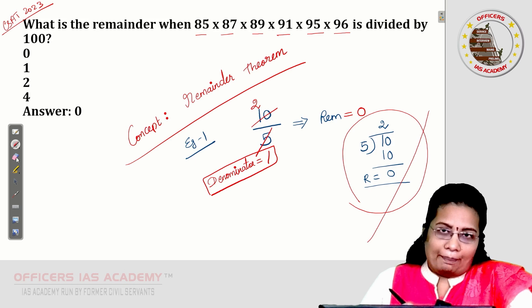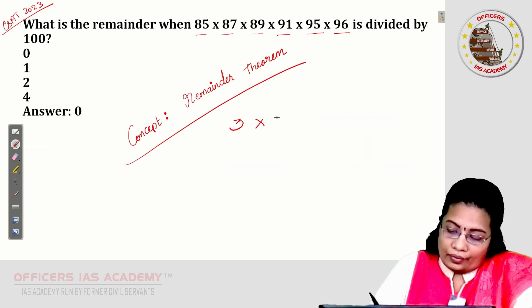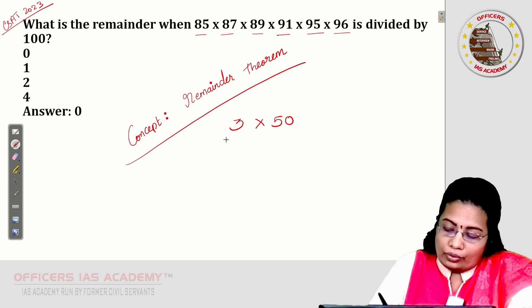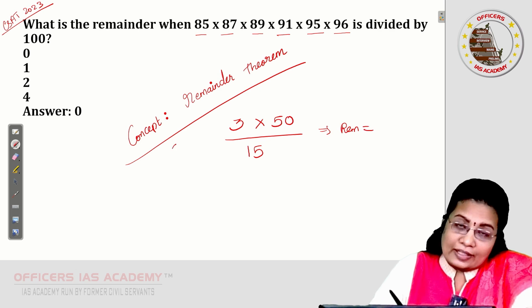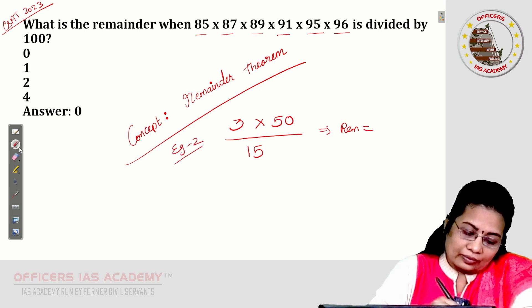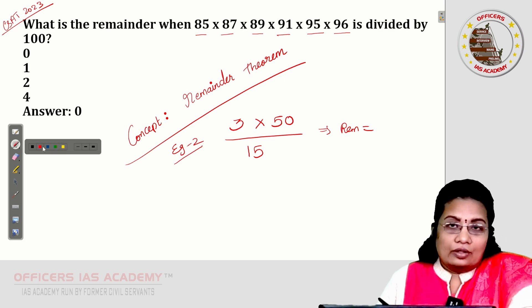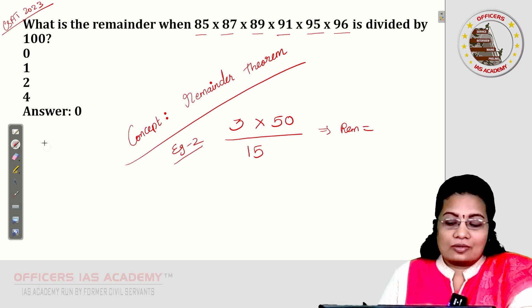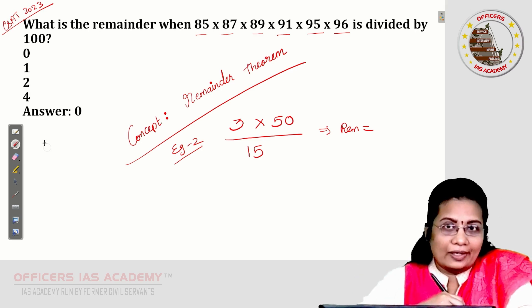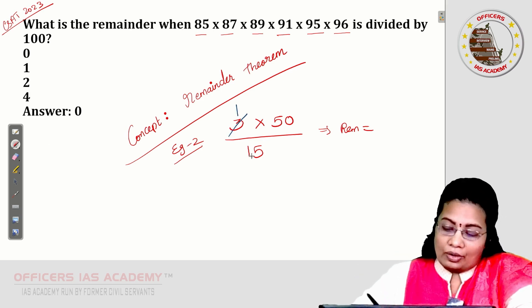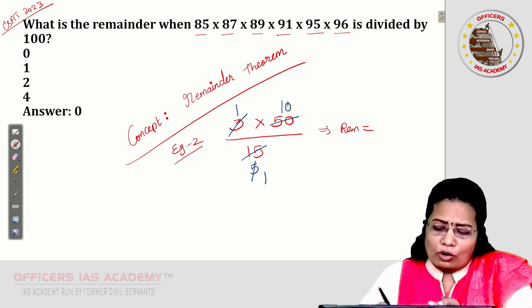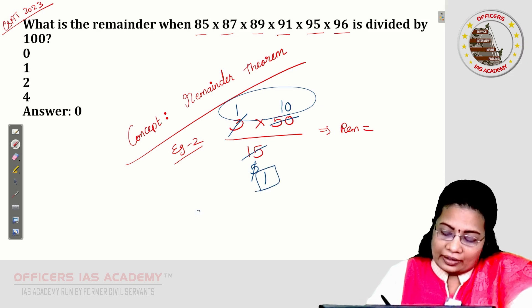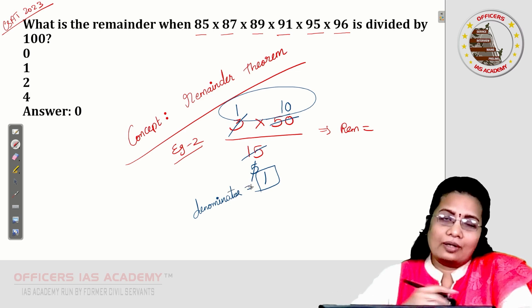One more example. If 3 into 50, this is the numerator I give you, divided by 15, what is the remainder? You can take this as example 2. Here without doing the division process, how to find it directly using the cancellation method. 1 times 3, 5 times 3, 1 times 5, 10 times 5. Irrespective of the numerator value, look at the denominator. After cancellation, the denominator became 1, which means remainder is 0.